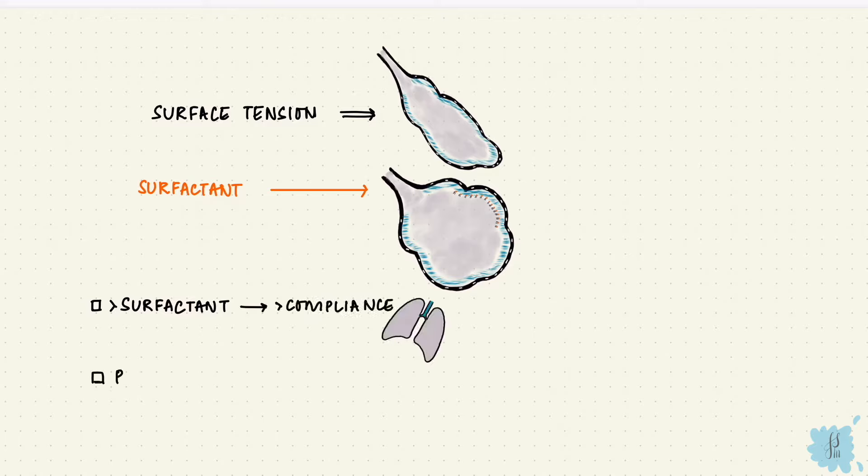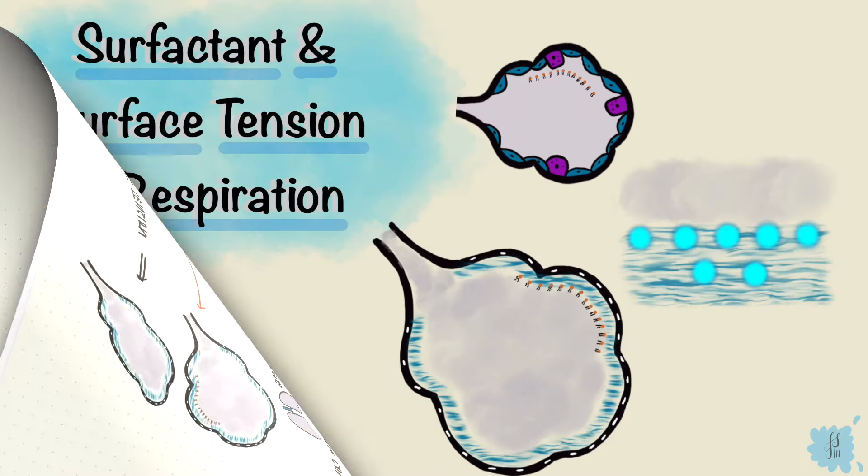And surfactant also prevents those small alveoli from collapsing during expiration. And that is surfactant and surface tension in respiration.